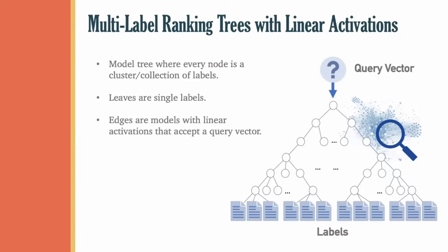Essentially, each edge going from a parent to a child in the tree is a learned probabilistic model with linear activations. So, for example, it might be a sparse support vector machine or perhaps a sparse logistic regression. These models on the tree edges accept a query vector and then return the likelihood that a child in the tree is relevant to that query. The predicted relevance of the labels at the bottom of the tree to the query vector is the composition of all of the likelihoods on the path from the labels at the bottom of the tree to the root of the tree at the top.